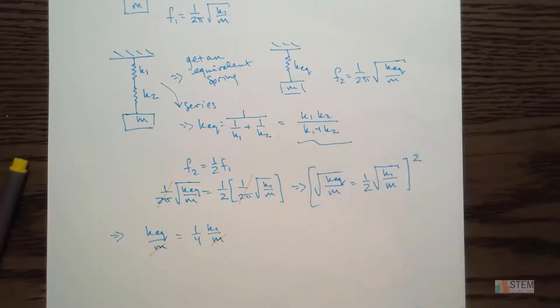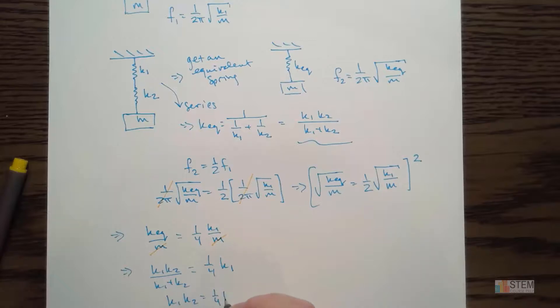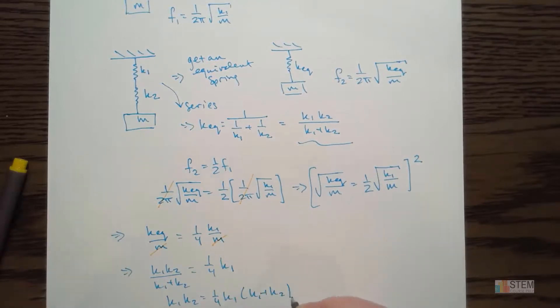Now that we've done that, we can't really simplify too much more. So we need to plug in our k equivalent. So that's this equation right here. So let's put that in. K equivalent equals 1 fourth times k1. I want k2 in terms of k1, so basically I need to solve this for k2. Let's take this, multiply here on the right side. And that gives us k1 k2 equals 1 fourth k1 times k1 plus k2.